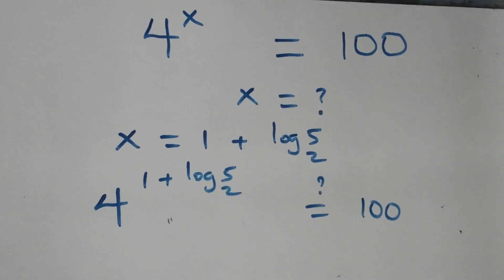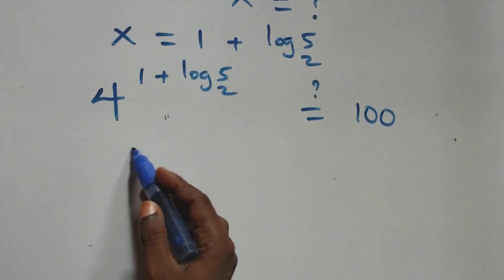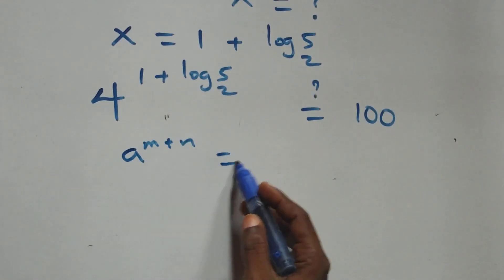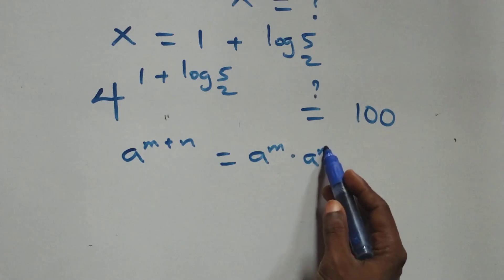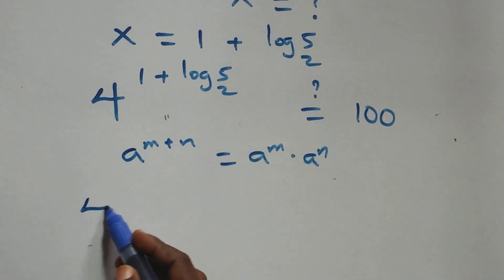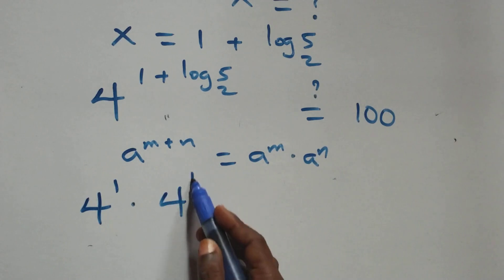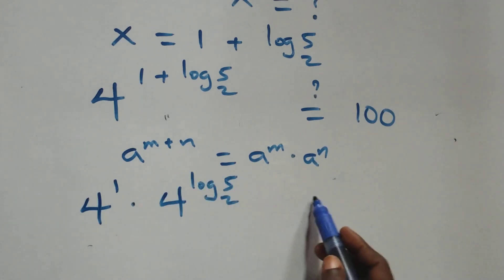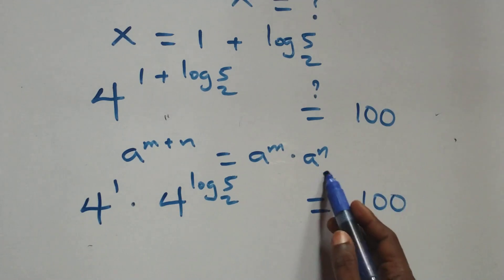This follows the law of indices. When we have a raised to the power (n plus n), this is the same as a raised to power n, times a raised to power n. So we have 4 raised to power 1, times 4 raised to power log₂5, which equals 100.